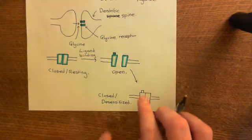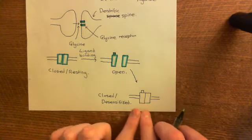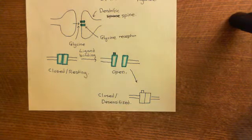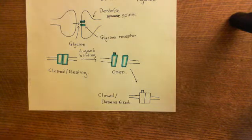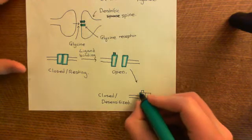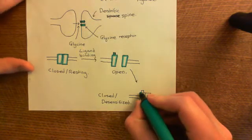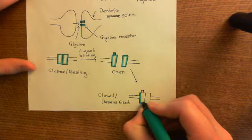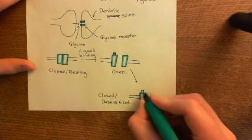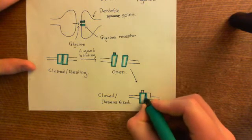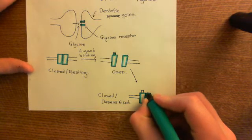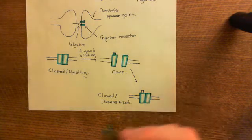Here is the ligand still bound, and this is the closed/desensitised state. This is a different state to the original closed state. Even though I've drawn it the same way just to get across the message that it is closed, it is fundamentally a different state of the receptor — the actual molecular structure is different. Basically, when a ligand binds to the receptor, it opens for a while, and then it closes again and goes into this closed, desensitised state.